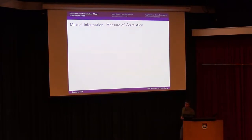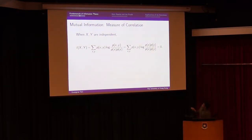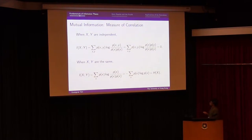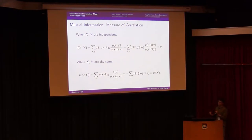Entropy is a rough measure of the level of uncertainty, while mutual information is a measure of correlation. When X and Y are independent, they couldn't be more uncorrelated — and you can verify from the definition that p(x,y) = p(x)p(y), so the mutual information equals zero. When X and Y are the same, the mutual information is maximized and equals H(X). So mutual information measures the correlation between two random variables.